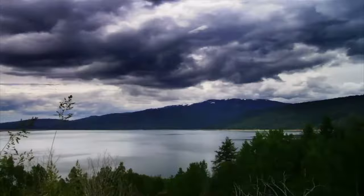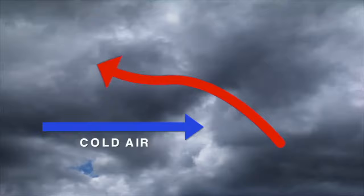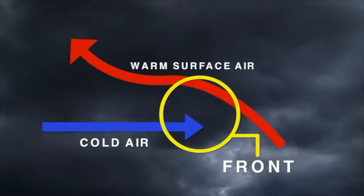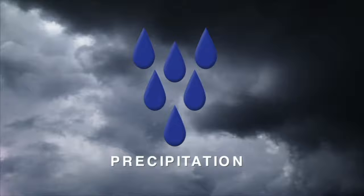Second, for precipitation to take place, warm surface air must rise over and above cold air. A front is where warm air and cold air meet. At a front, warm moisture-filled air rises above cold air masses. The warm air cools, so the water condenses, releasing the moisture as precipitation.